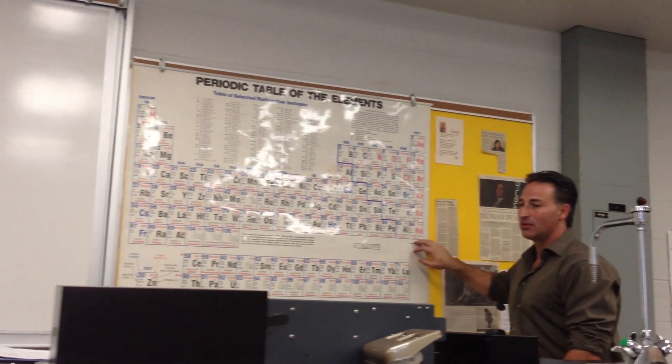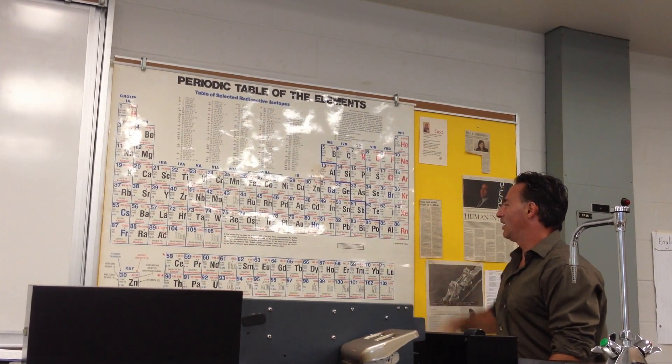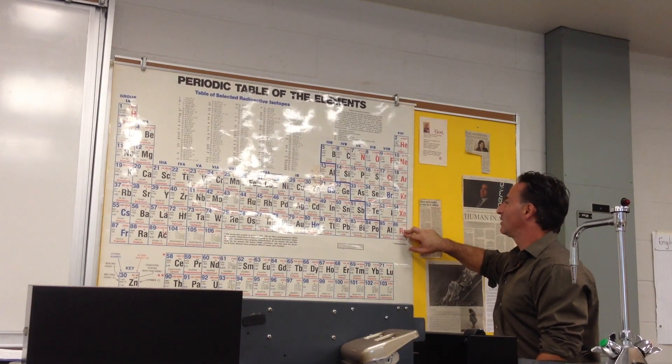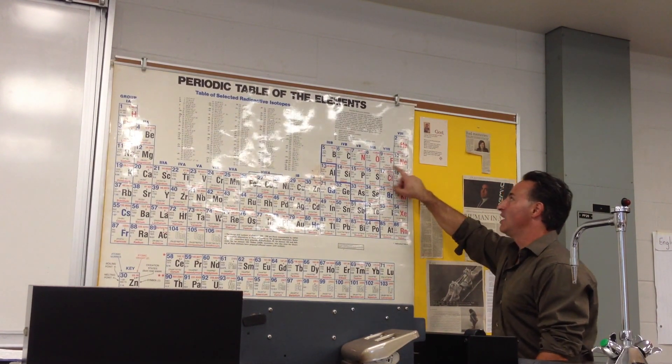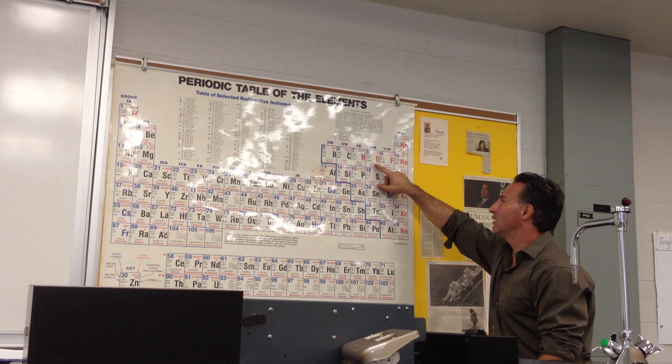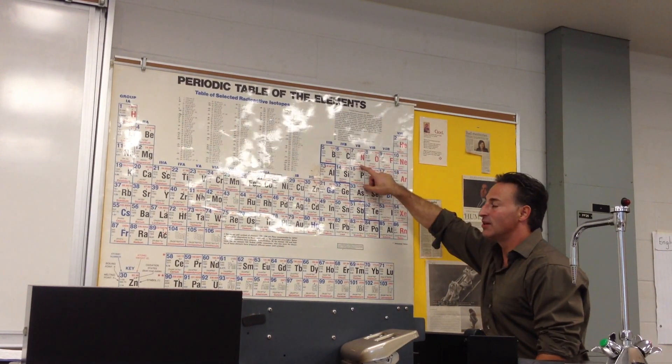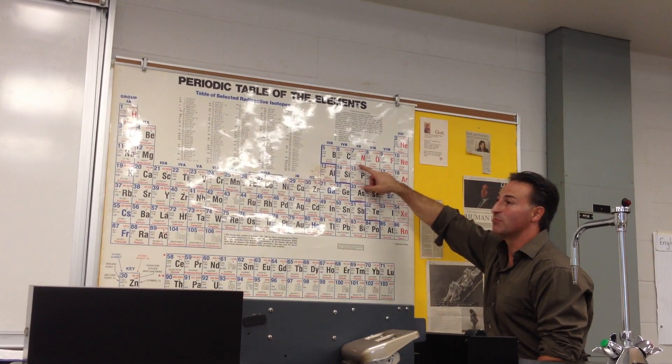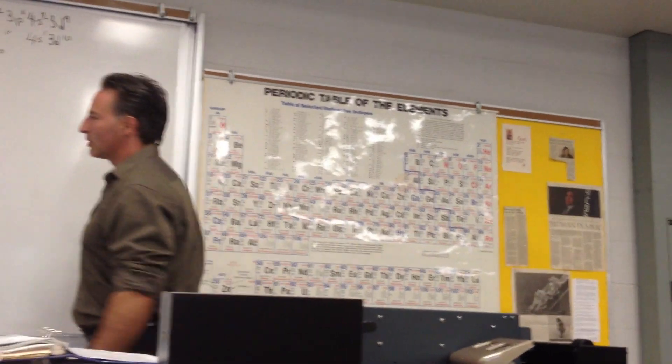The noble-gas configuration is the most stable, and most atoms will try to, or will usually end up adopting that configuration. For example, when fluorine gains one electron, it goes from p5 to p6. When oxygen becomes an anion, it becomes oxide, and it goes from p4 to p6. When nitrogen becomes an anion, it becomes negative 3, and it goes from p3 to p6. So you can see they're all becoming at least isoelectronic with the closest noble gas.